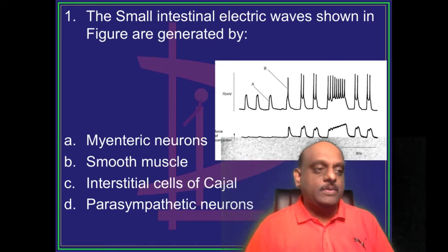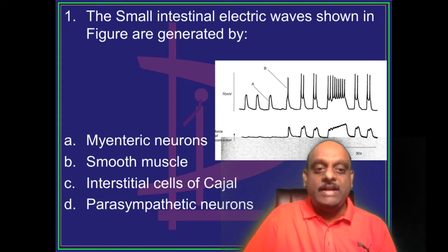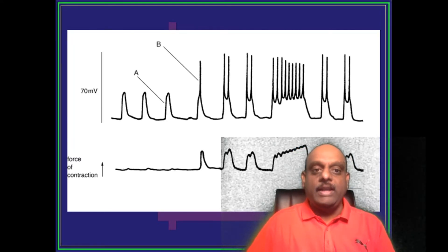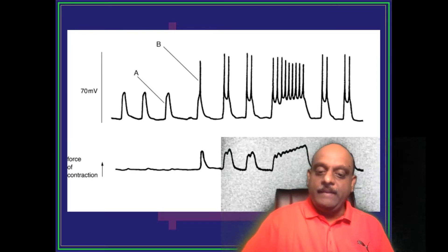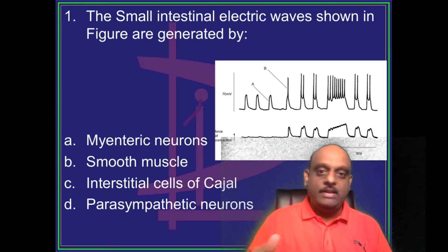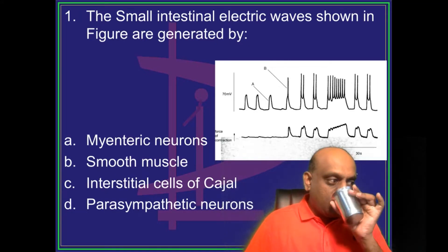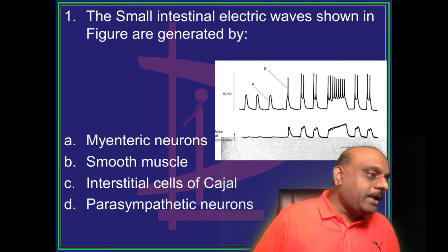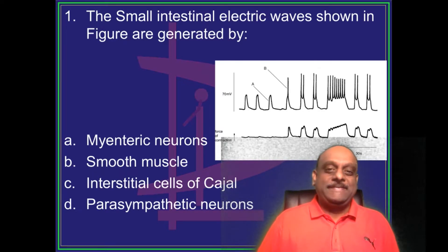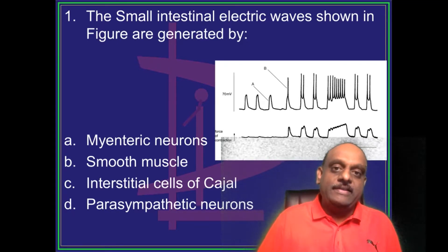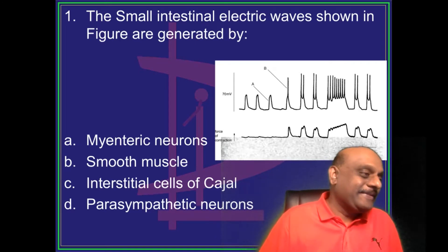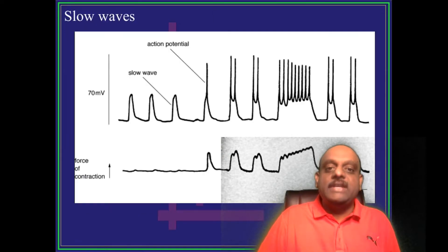The small intestinal electrical waves shown in the figure — how are they generated, and who generates them? These are the intestinal peristaltic waves; we are talking about the electrical activity. Chandrakant, Haider, Amrita — everyone is saying interstitial cells of Cajal. You have become experts in the question bank. Looking at the answers, you should identify what the examiner is asking based on high-yield topic revision. Most of you are right: it is the interstitial cells of Cajal.